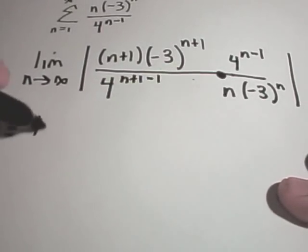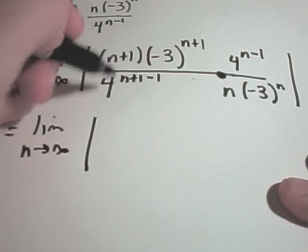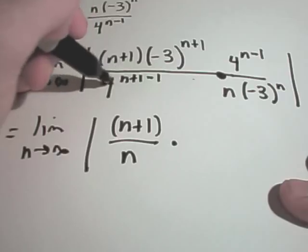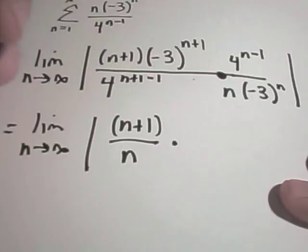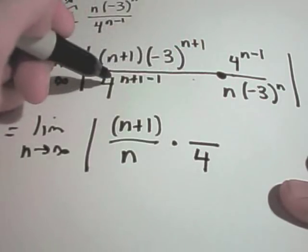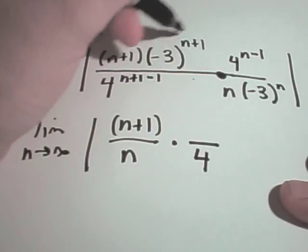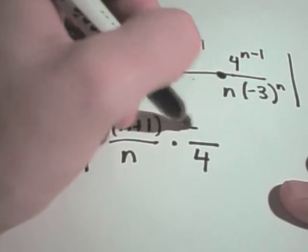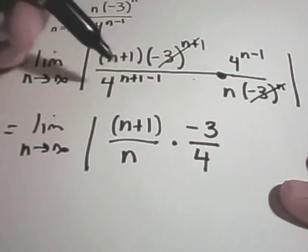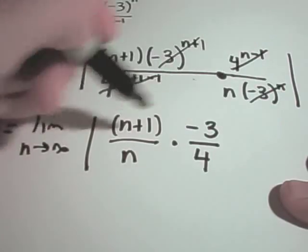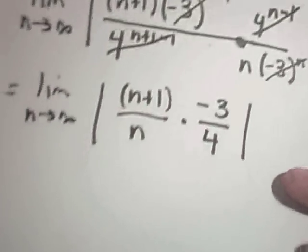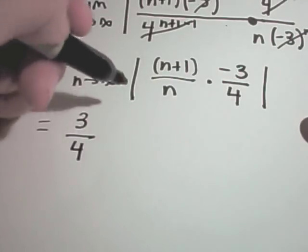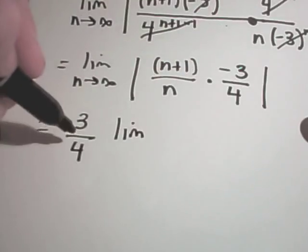Simplifying: on the 4s, I have n plus 1 minus 1, which is 4 to the n in the denominator — but I only have n minus 1 in the denominator from the original, so I'm left with a 4 in the denominator. For the negative 3s, I have n plus 1 of them on top and n on the bottom, so canceling leaves me with negative 3 on top. That takes care of the negative 3s and the 4s, and I'm left with n plus 1 over n out front. When you pull the constant outside the absolute value, it comes out as the positive value, so instead of negative 3 fourths we get positive 3 fourths.